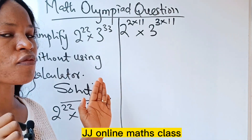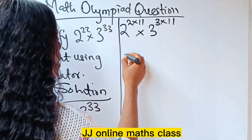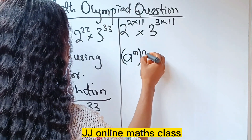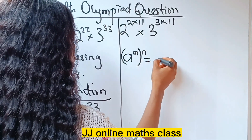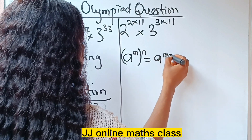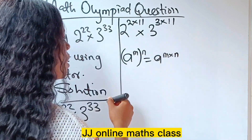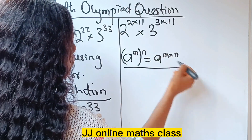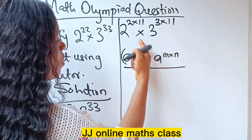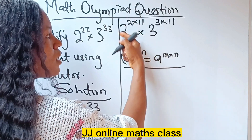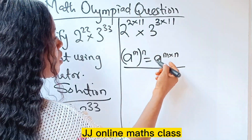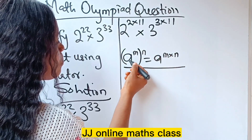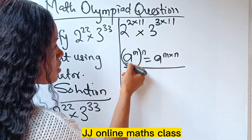Remember this law of indices which states that a raised to the power of m, raised to the power of n, is equal to a raised to the power of m times n. Our expression is already in this form, so let's apply it.